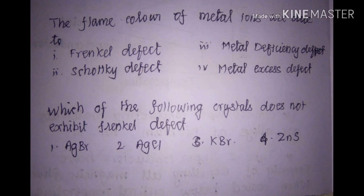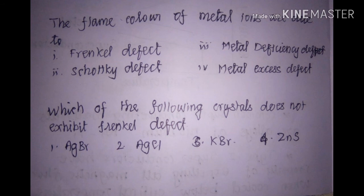The next question: which of the following crystals does not exhibit Frenkel defect? The options are silver bromide, silver chloride, potassium bromide, and zinc sulfide. Schottky defects are favorable for compounds with high coordination numbers and comparable ionic sizes — like potassium bromide, which can form only Schottky defects. AgBr, AgCl, and zinc sulfide will form Frenkel defects. AgBr can form both Frenkel and Schottky defects. But KBr can form only Schottky defects, not Frenkel defects. Thank you for watching the session.